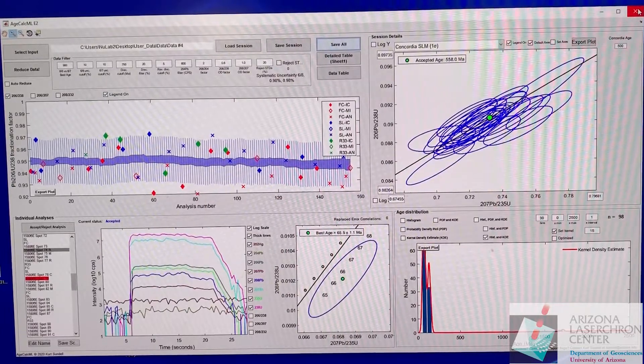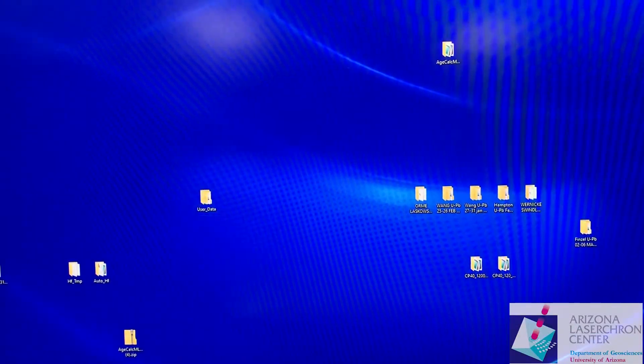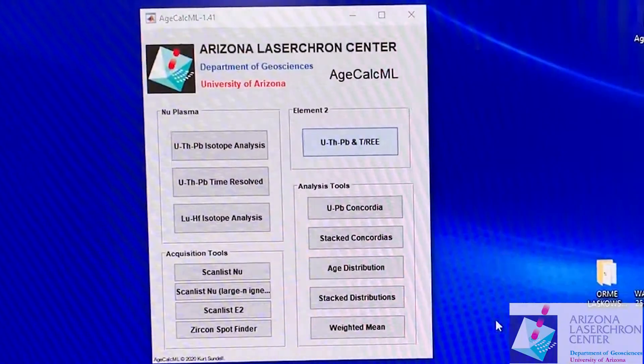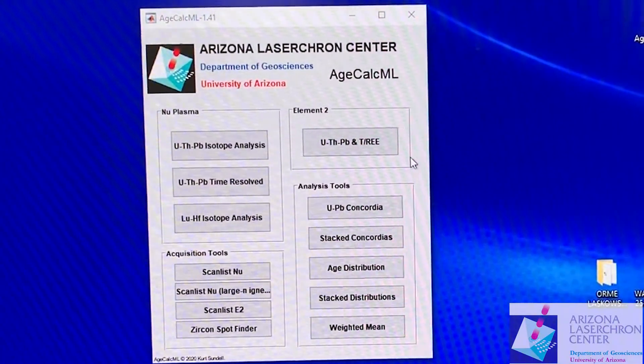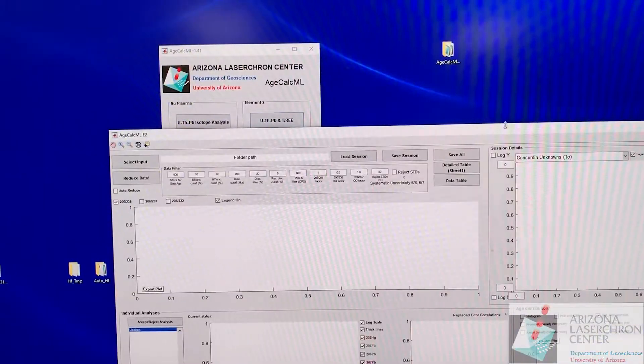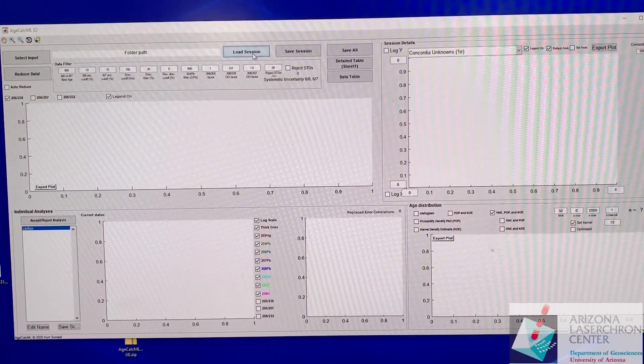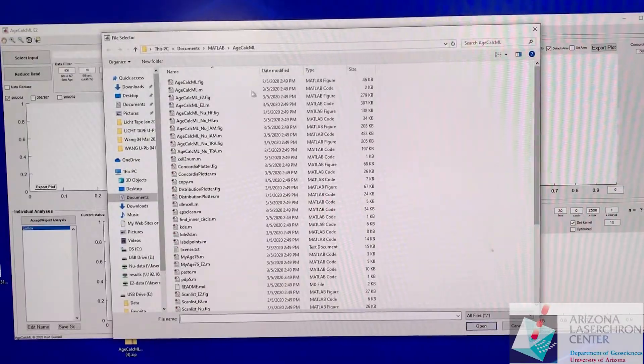If we close all of this out, now it's all saved you can x out of that. Say you opened up a fresh AgeCalc and you want to take a look at where you left off or where somebody left off that reduced your data. You go back into Element 2 and uranium lead reduction and now we want to load that session. We're going to load that dot mat file.